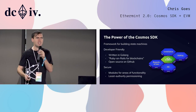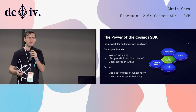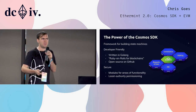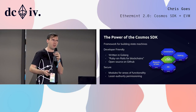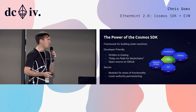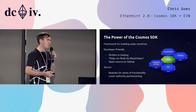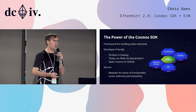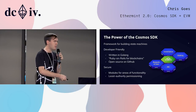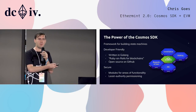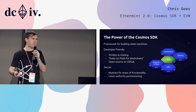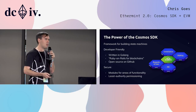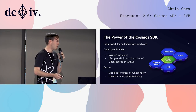The Cosmos SDK is a framework for building custom state machines. It contains all the glue library code of blockchains — AVL trees, message handlers, all the logic to knit modules together. Super developer-friendly. It's written in Golang, which many of you are probably familiar with. It's all open source on GitHub.